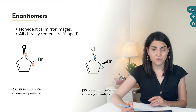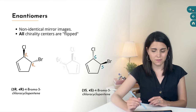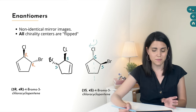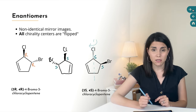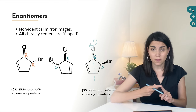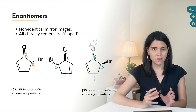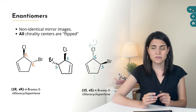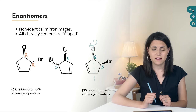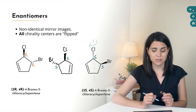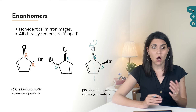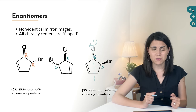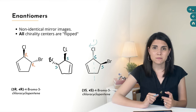We can tell it's a mirror image if we simply rotate that second molecule around an axis and then we can see clearly that it is the mirror image of the first one. So these two molecules are enantiomers of one another. We can tell that they're enantiomers because all of the configurations of all of the stereocenters have been switched — we went from RR to SS. So when you see a molecule where all of the configurations of all of the stereocenters are inverted, you are dealing with enantiomers — mirror images.